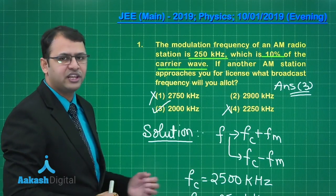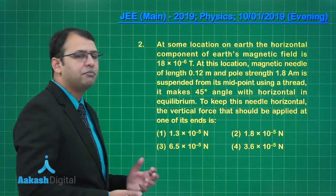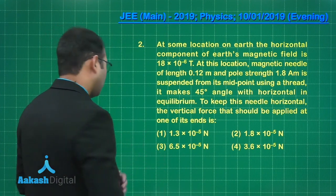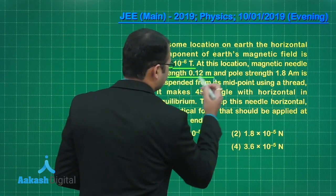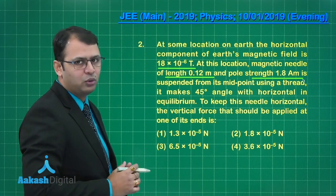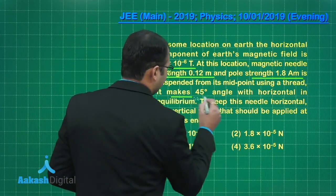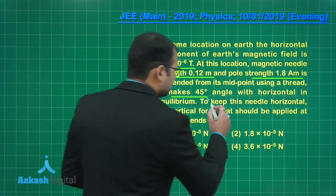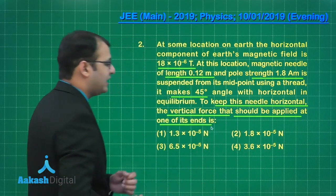Let's move on to our next question. This question belongs to section electromagnetism of chapter magnetism and matter. As per the question, at some location on earth, the horizontal component of earth's magnetic field is given. At this location, the magnetic needle length is 0.12 meter and pole strength is given. This can be utilized to find the magnetic moment which is the length of the magnetic needle into the pole strength. It makes 45 degree with the horizontal in equilibrium. To keep this needle horizontal, the vertical force that should be applied at one of its end is?